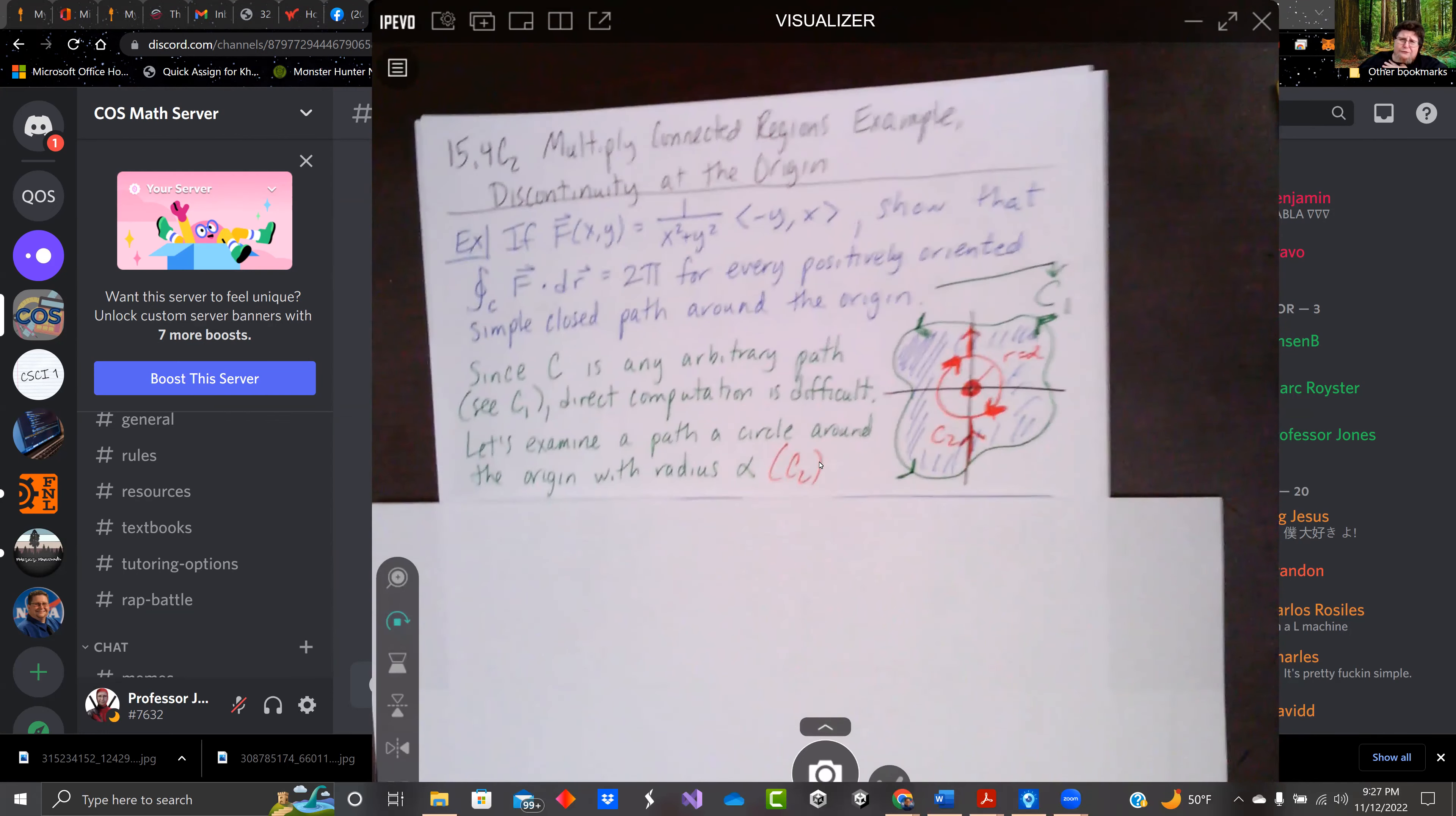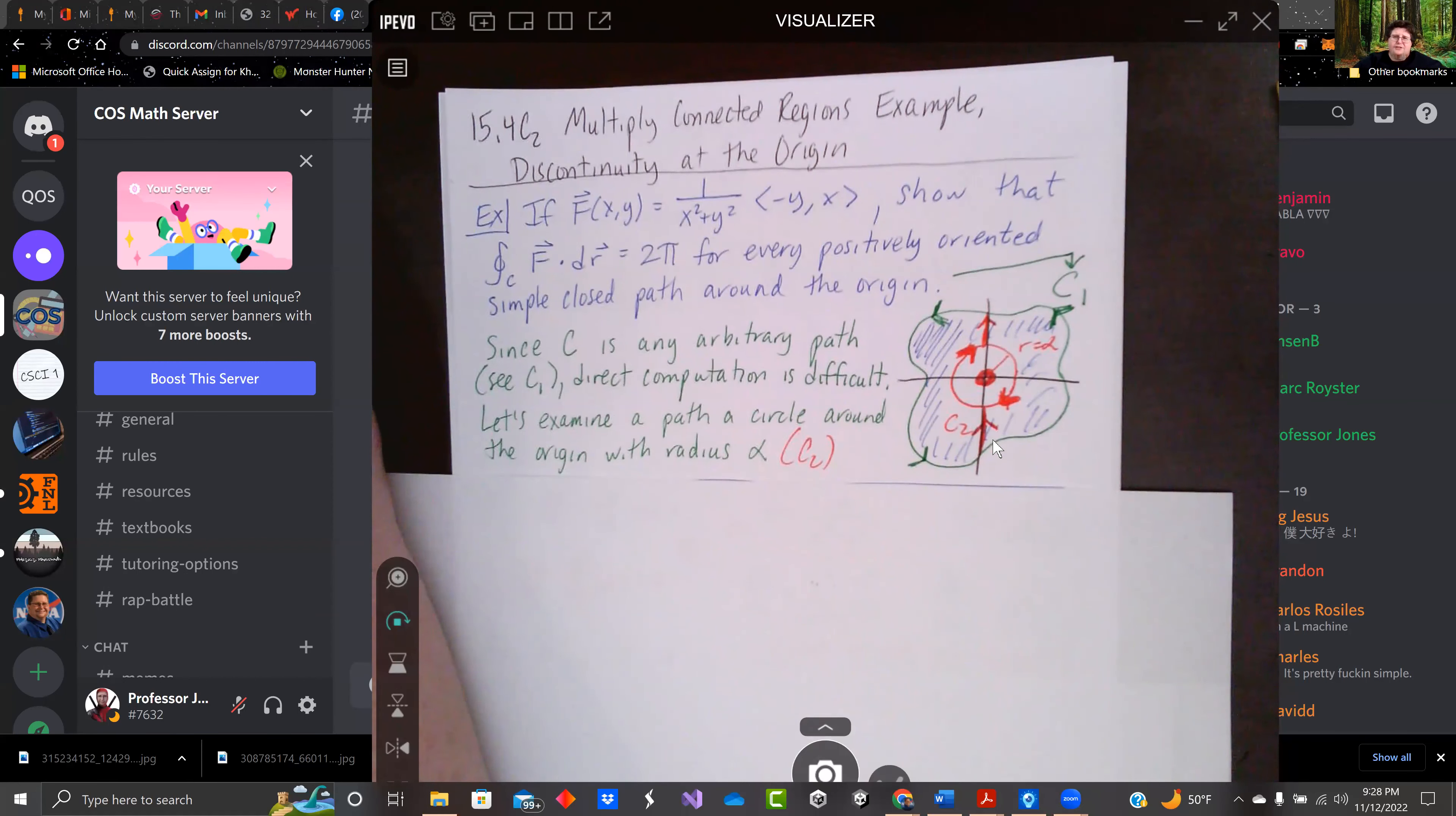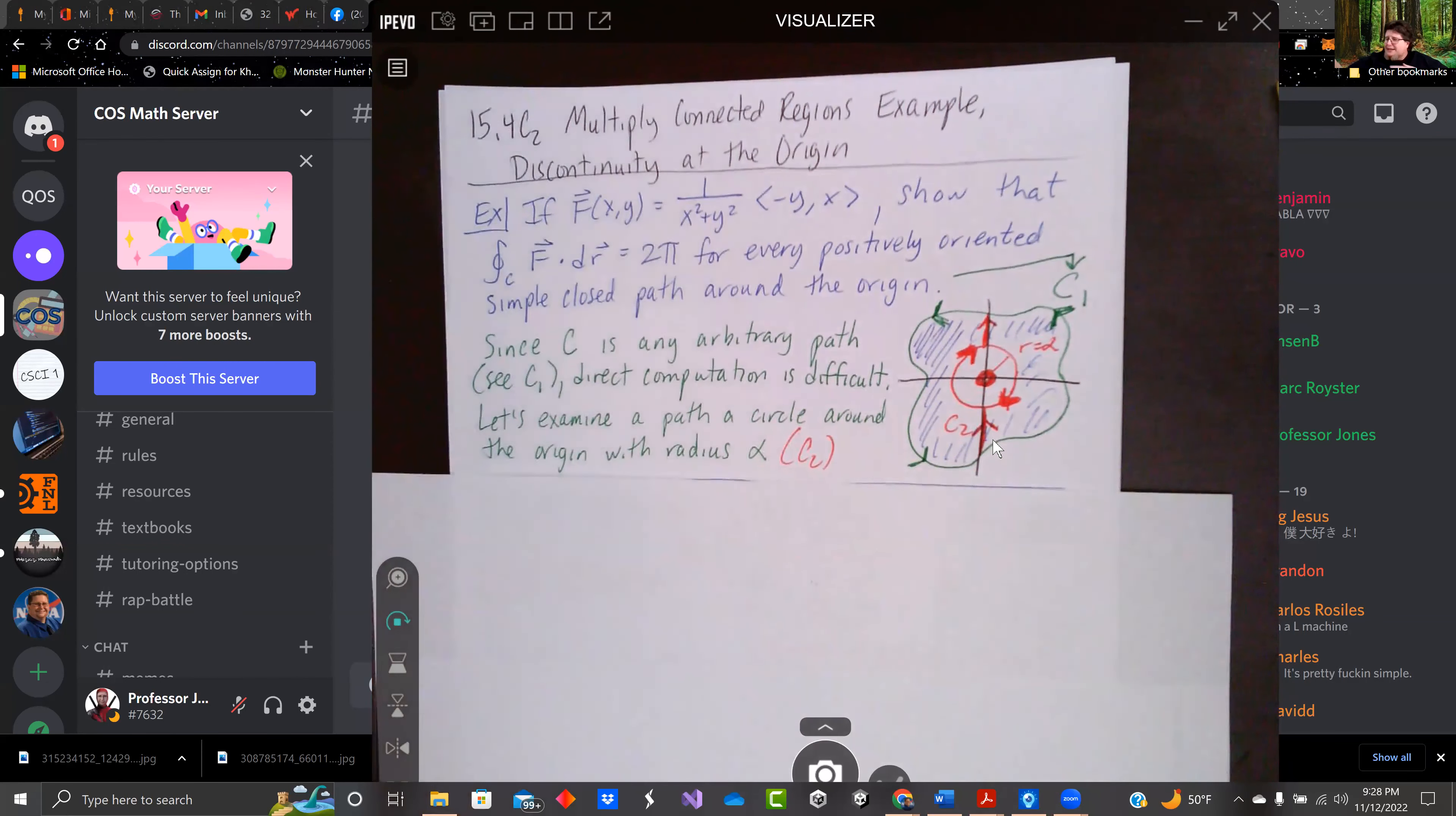Let's use it for a discontinuity of the origin in our next example. Let's jump into it with an example. We're going to look at the function where we have negative y and x as our two vector pieces, multiplied by a scalar value, 1 over x squared plus y squared.